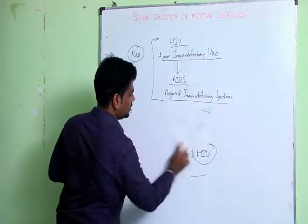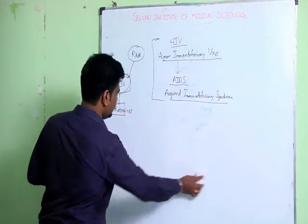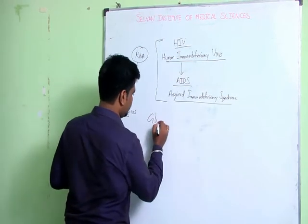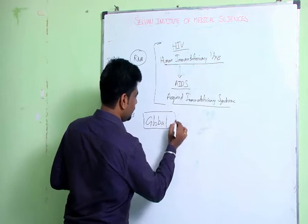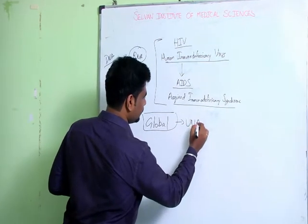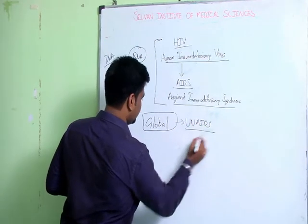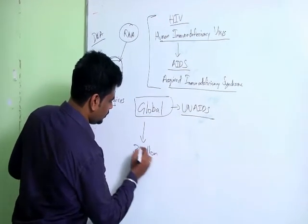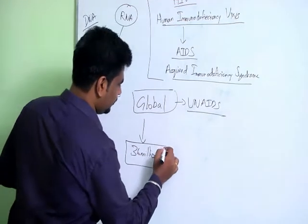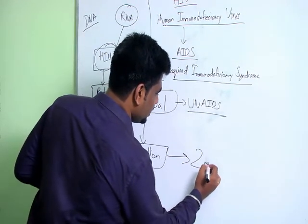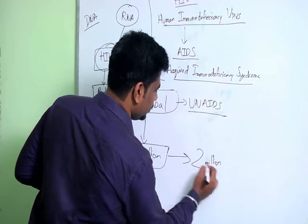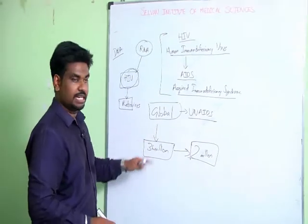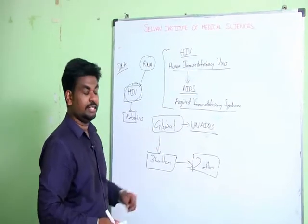Regarding the incidence of HIV, the global report by UNAIDS suggests that there are around 36 million people in the world currently living with HIV, and out of that, 2 million people die every year due to this disease. This is the global statistics released by UNAIDS in 2014.